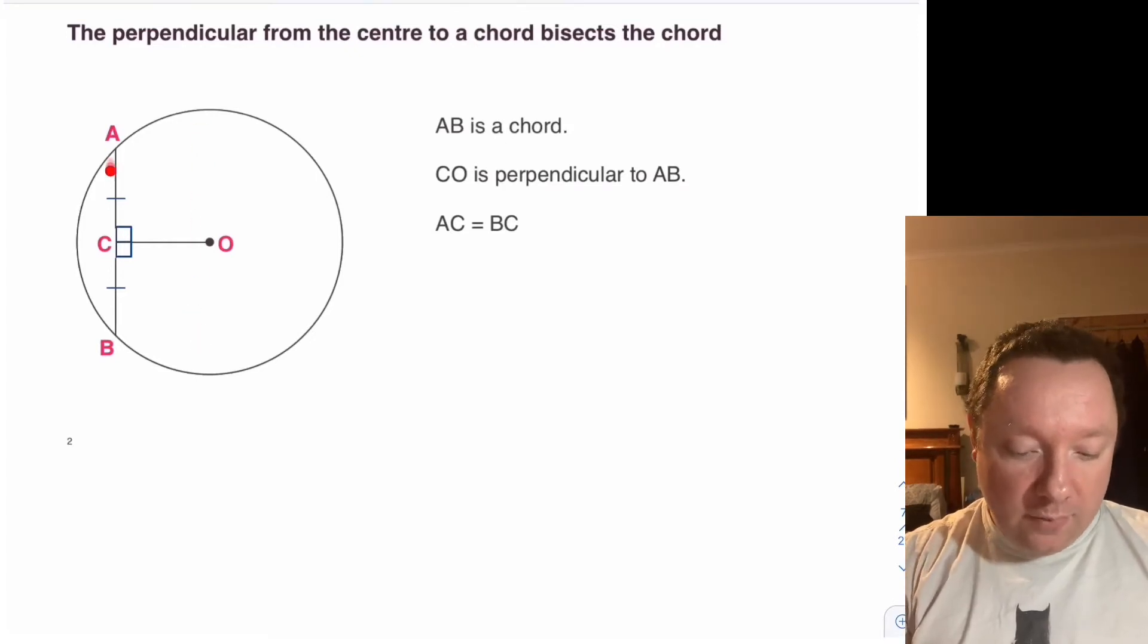So the theory is saying that if I take a chord like this line and I draw a radius down at right angles, it'll cut it in half.